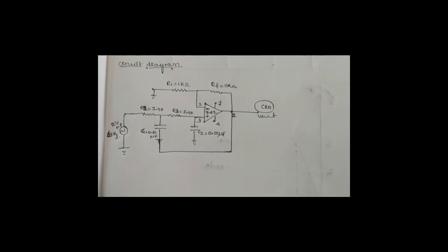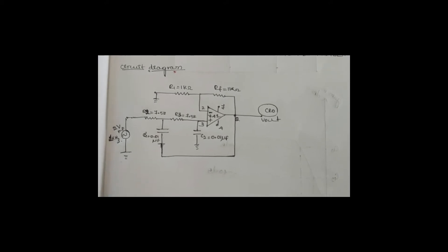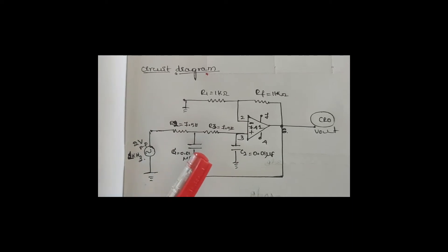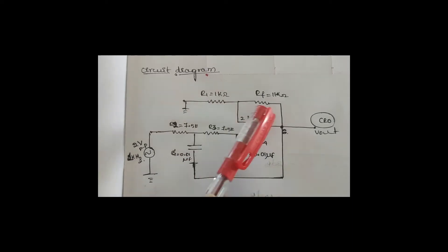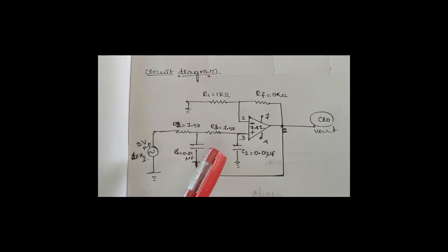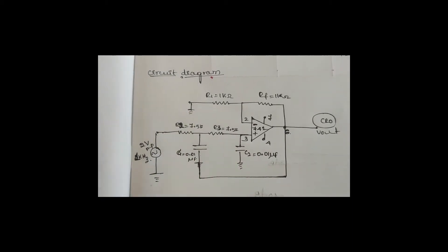A stopband response having a 40dB per decade roll-off is obtained with a second-order low-pass filter. A first-order low-pass filter can be converted into a second-order low-pass filter simply by using an additional RC network. The gain of the second-order filter is set by R1 and RF, while the high cutoff frequency FC is determined by R2, C2, R3, and C3.